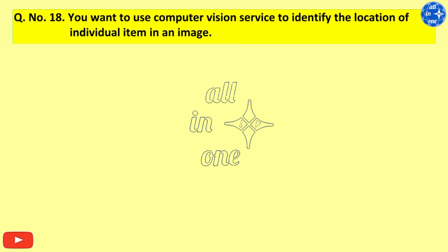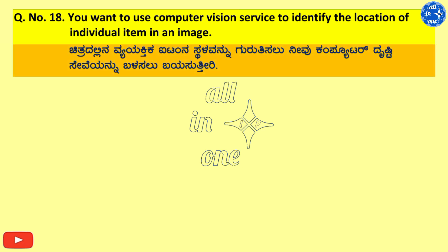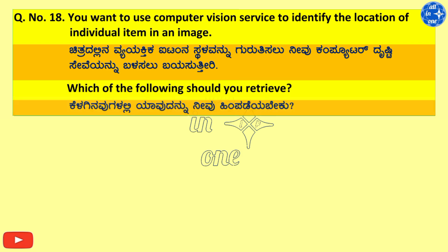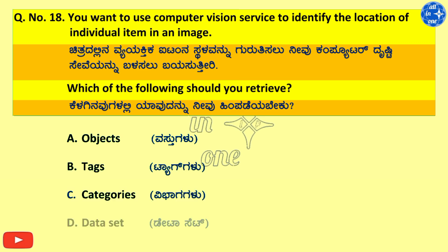Question number 18. You want to use Computer Vision Service to identify the location of individual items in your image. Which of the following should you use? Right answer is Objects.